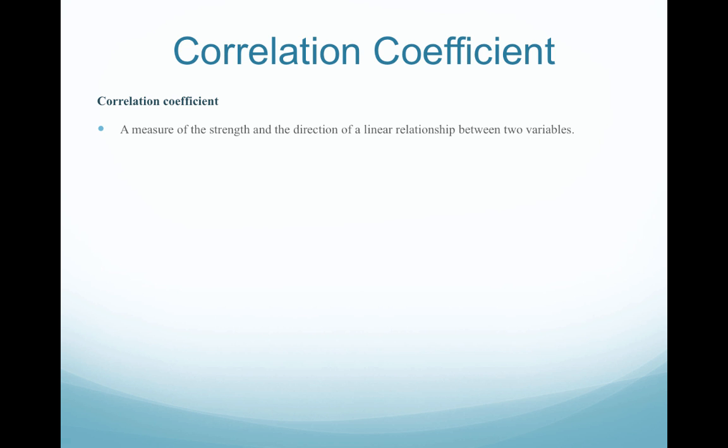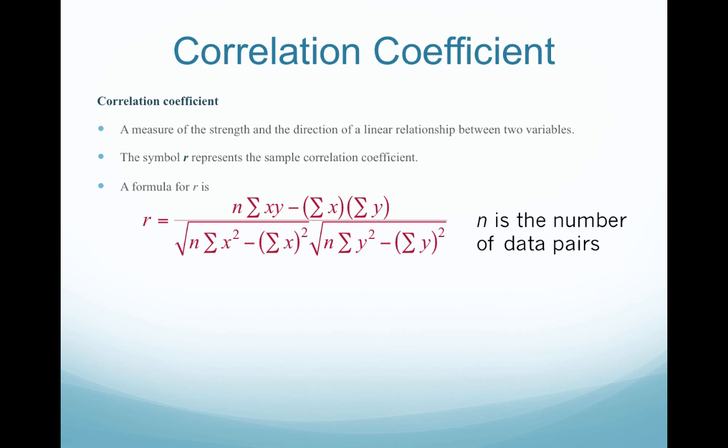Let's talk about the correlation coefficient. The correlation coefficient is a measure of the strength and the direction of a linear relationship between two variables — does a relationship exist, is it positive or negative, and how strong is it? The symbol R represents the sample correlation coefficient, often referred to as the Pearson correlation coefficient. This is the formula for R — what we had to use before technology. But in Excel, you have a function where you can get the Pearson correlation coefficient very quickly and interpret it as strong or weak and directional.